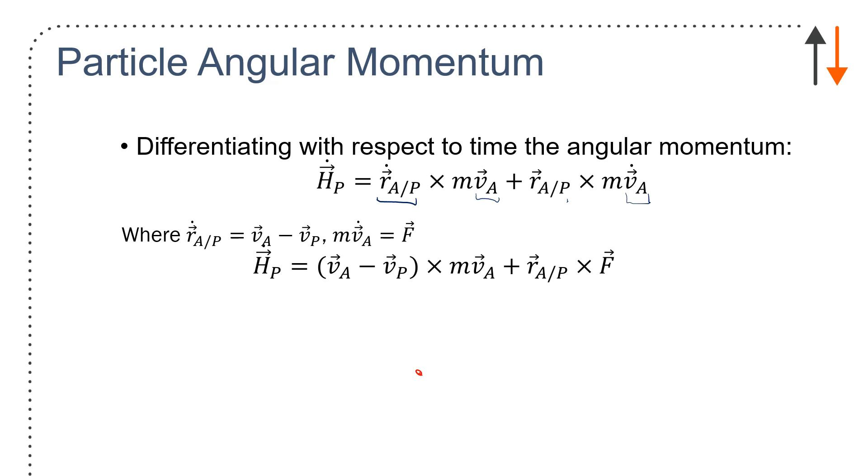And v_a dot has force because it's multiplied by a mass. So looking at this term, I have velocity of a here, velocity of a here. And I have r_a with respect to p cross with f.